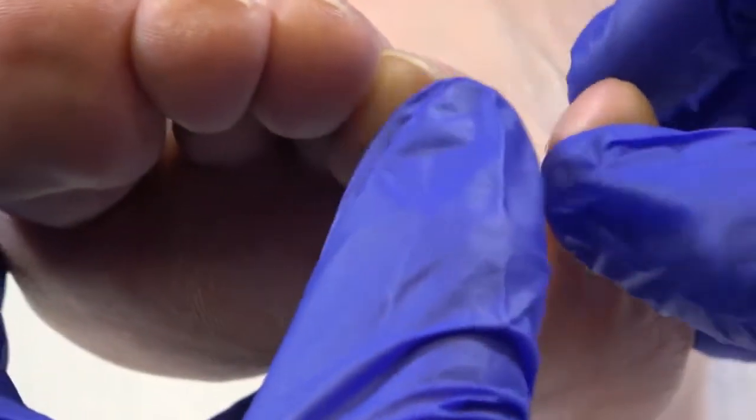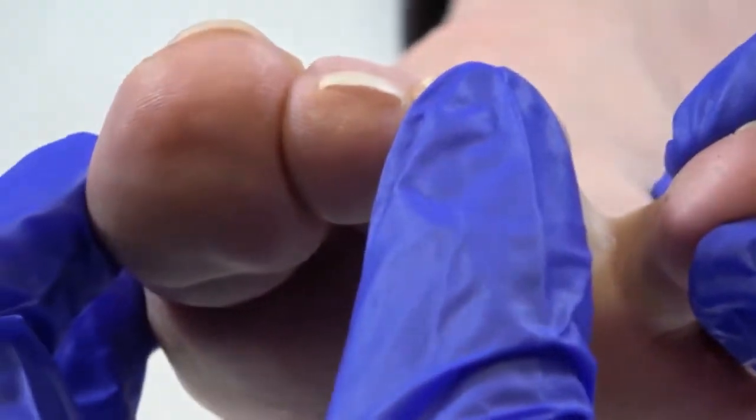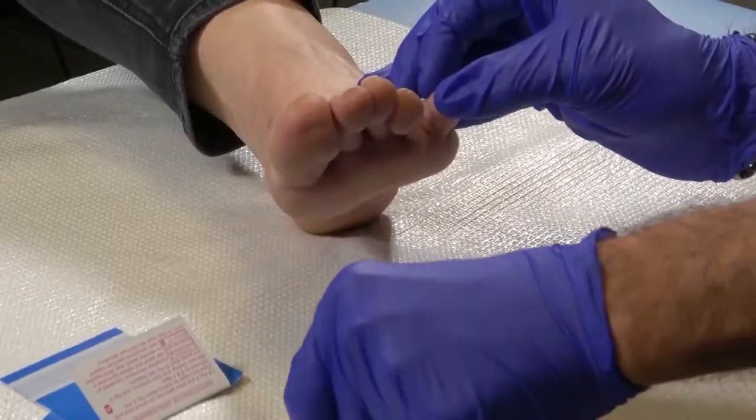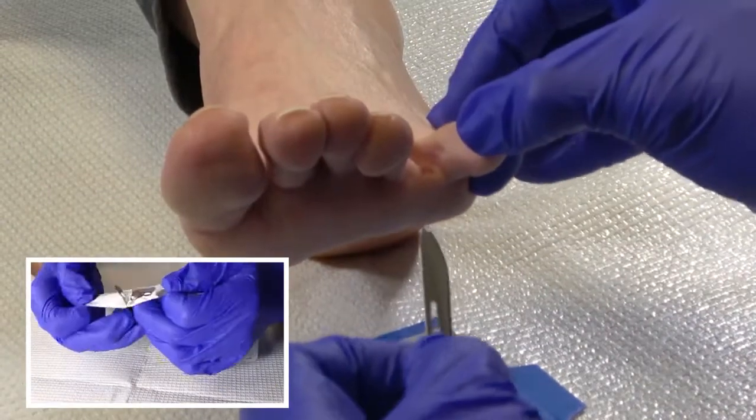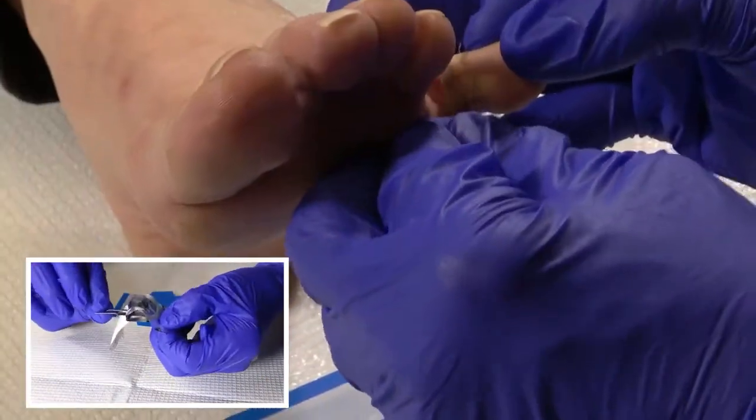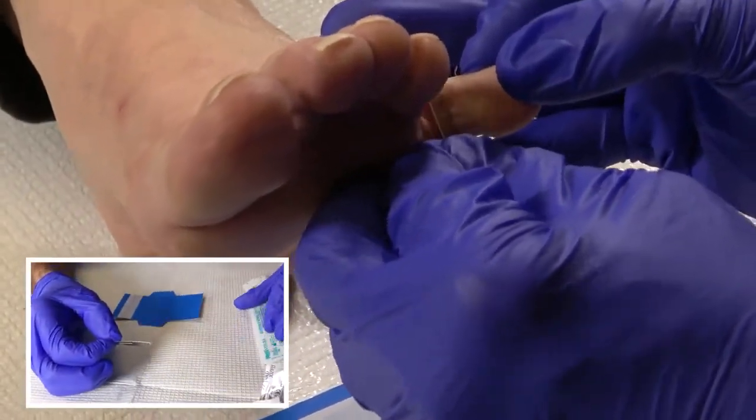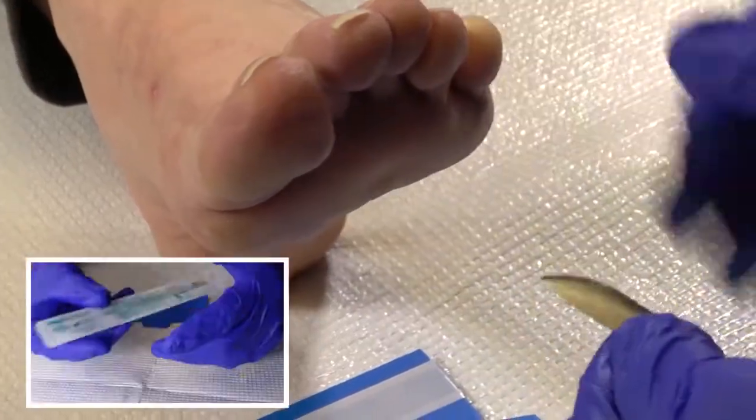The collection method for a web space is a simple superficial skin scraping performed in office. The scraping can be performed utilizing a 10 or 15 blade, however any size blade may be used for specimen collection.